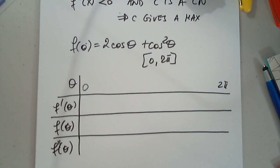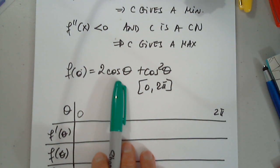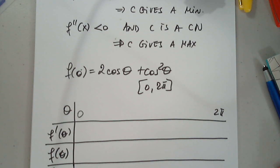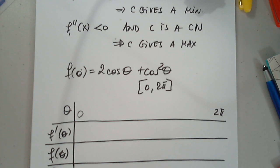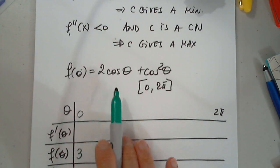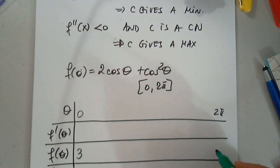Our first step is to find everything about the function, and I will plug in zero. How much is cosine zero? Cosine zero is one, and this is one, so two plus one is three. The same thing for two pi — same number, so two plus one is three.